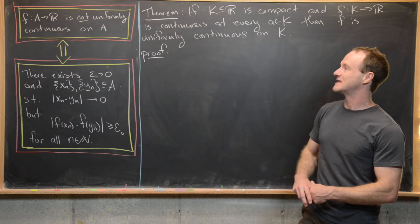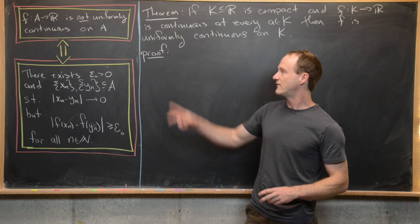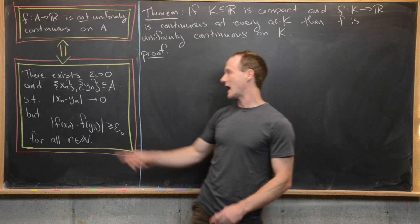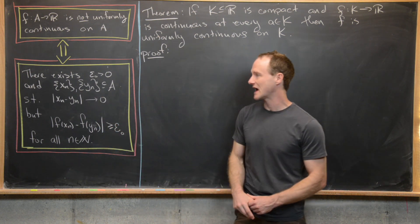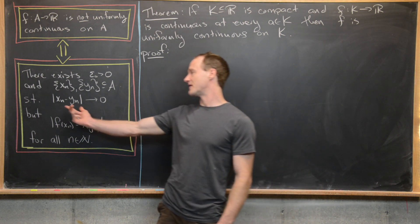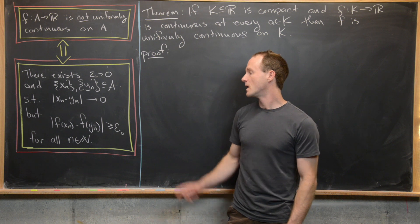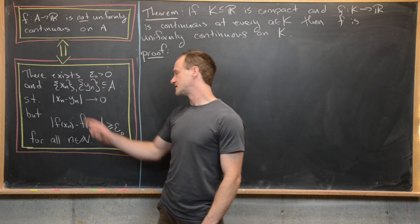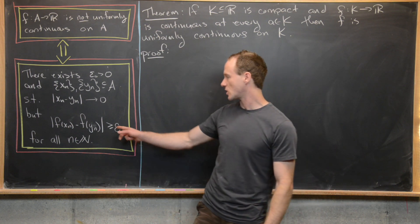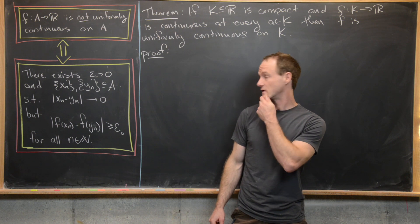The criterion states: f from A to ℝ is not uniformly continuous on A if and only if there exists epsilon_0 greater than zero and two sequences x_n and y_n in A such that the difference of the terms of these sequences approaches zero, but the difference of the terms after being plugged into f is always greater than or equal to epsilon_0.